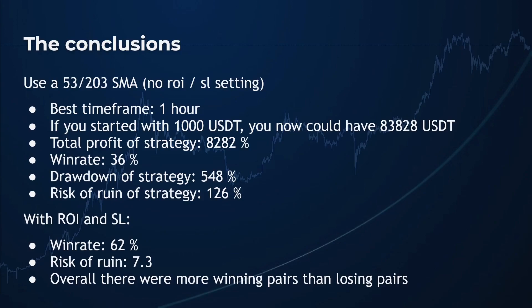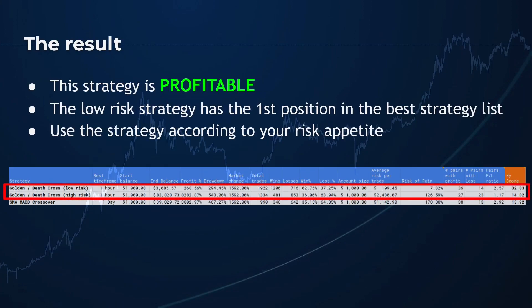If you do not like these risks, then use take profit and stop loss points. The points given by the hyperopt engine cause the amount of winning trades to increase from 36% to 62%. However, you lose the chance of getting huge profits with a relatively small amount of money and have moderate gains. After entering both results in my overall strategy comparison, the end result is that this strategy is more profitable than the earlier tested SMA MACD crossover strategy. The low-risk option has a higher end score, primarily because it has a much higher winning rate. So all in all, this strategy looks profitable for trading with digital assets. Before you decide to trade with this strategy, please do your own research and backtest according to your own methodology to be sure that this trading strategy is right for you.